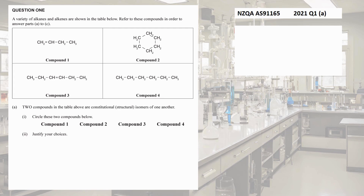The very simple thing to do here is to count up the number of atoms in each compound. In compound one there are four carbons, whereas in compounds two, three, and four there are six — so compound one is definitely out. Compound two looks kind of different to compounds three and four, so let's look at three and four.